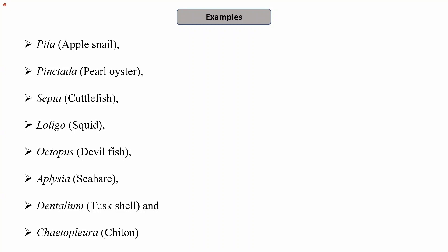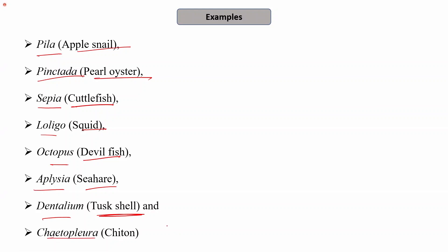Important examples to remember with their scientific and common names include: Pila (apple snail), Pinctada (pearl oyster — cultured to obtain pearls), Sepia (cuttlefish), Loligo (squid), Octopus (devilfish), Aplysia (sea hare), Dentalium (tusk shell), and Chiton (Chitonoplura). With this, we have completed phylum Mollusca. In the next class, we will take up phylum Echinodermata and, if time permits, begin Hemichordata.